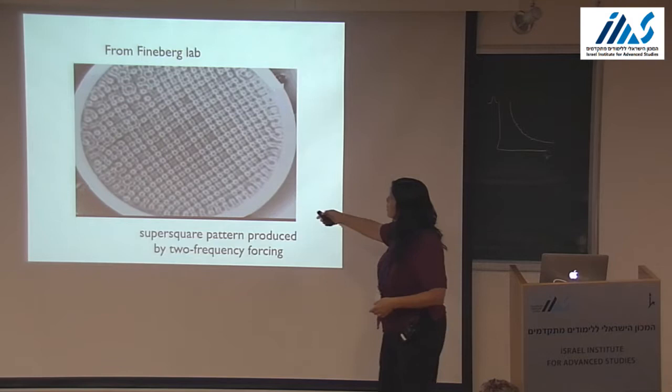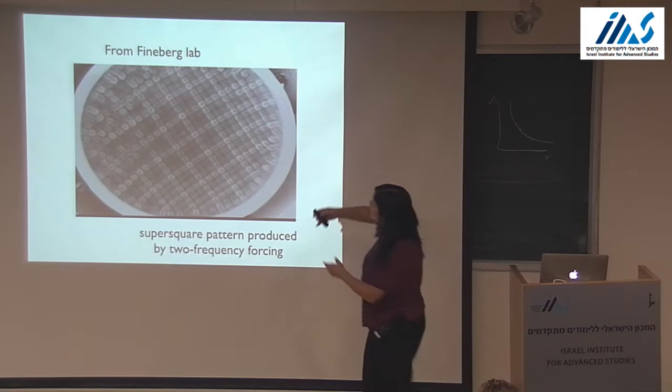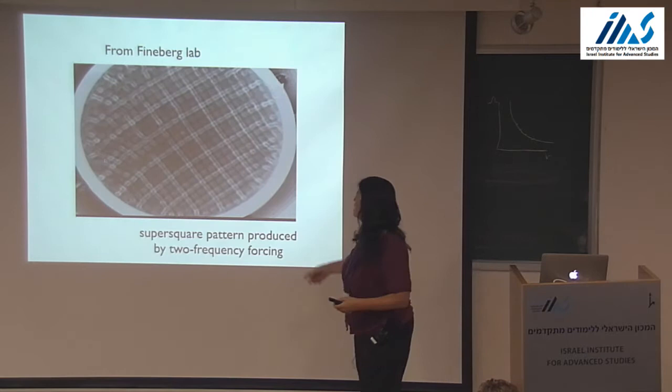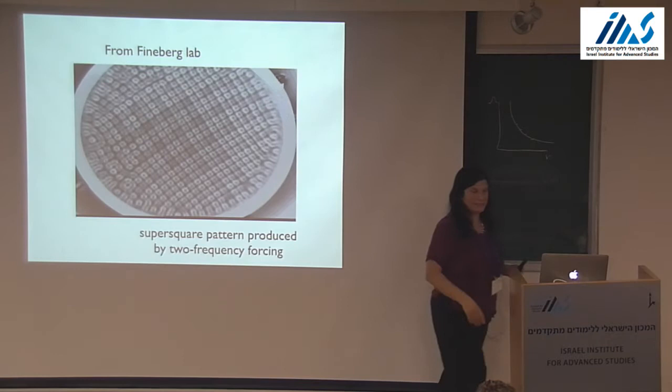This is super squares. You see the squares, but now you're going to see squares of squares — a big square surrounding little squares. This is super squares, and it is elicited by two-frequency forcing, which is why you have the two wavelengths.